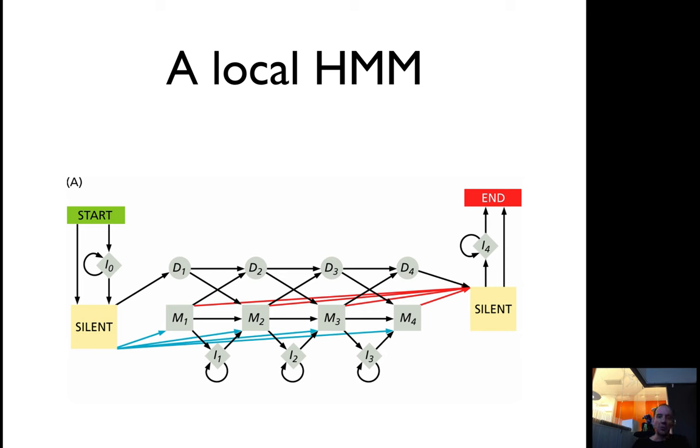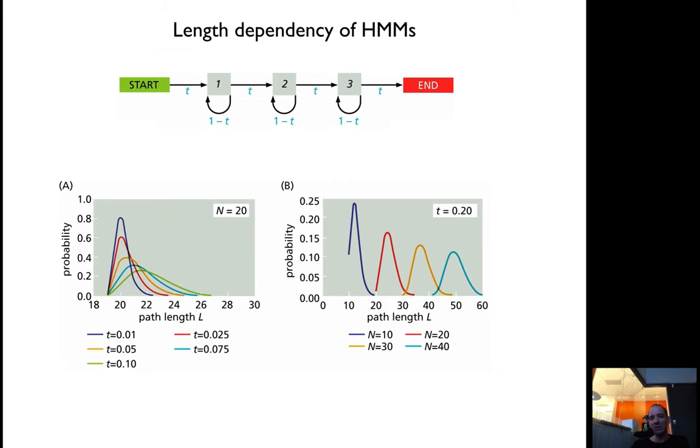You can also do local alignments and multiple sequence alignments by jumping around here. You can have some silent states in the beginning and then just jump in. You can have a start state and it jumps into a state in the middle and jumps out of a state in the middle. You can generate things of different lengths or generate different distributional lengths by playing around with these kinds of transitions.